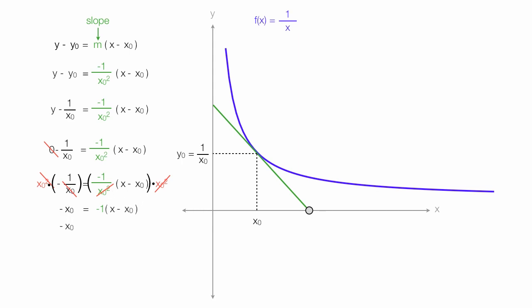On the left-hand side, I bring down negative x0. And on the right-hand side, I take negative 1 times x, which is negative x, and then negative 1 times negative x0, which is positive x0.